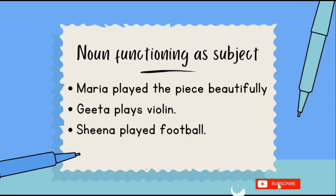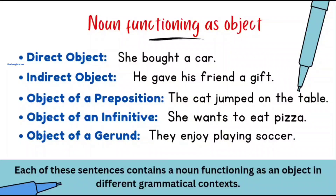Nouns functioning as subject: 'Maria played the piece beautifully,' 'Geeta plays violin,' 'Sheena played football.' In these three examples, Maria, Geeta, and Sheena are always placed at the beginning of the sentences. If you ask the verb 'who' — who played, who plays — you get the answer: Maria, Geeta, Sheena. So here you can easily see that the nouns are working as the subject of the sentences.